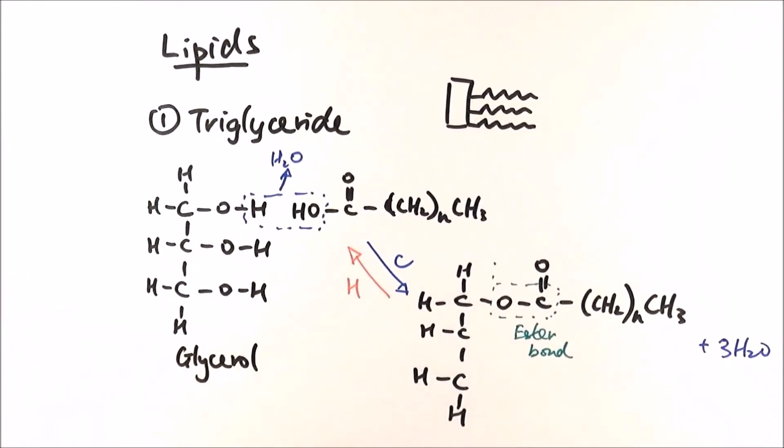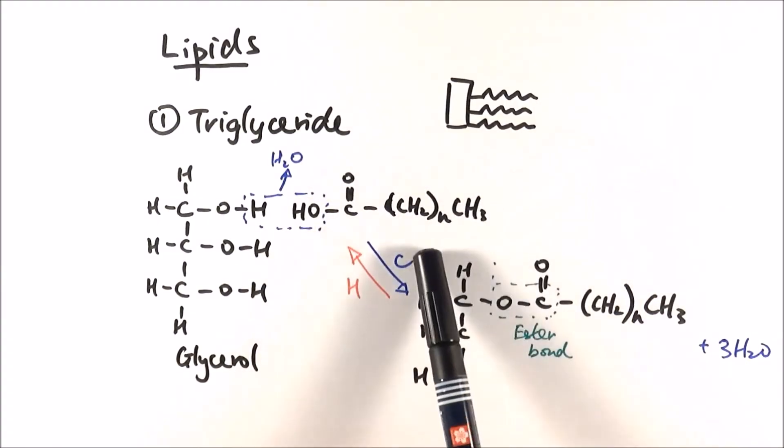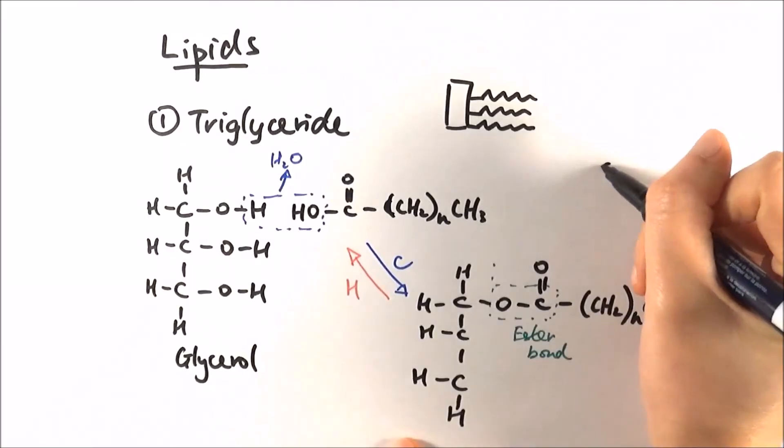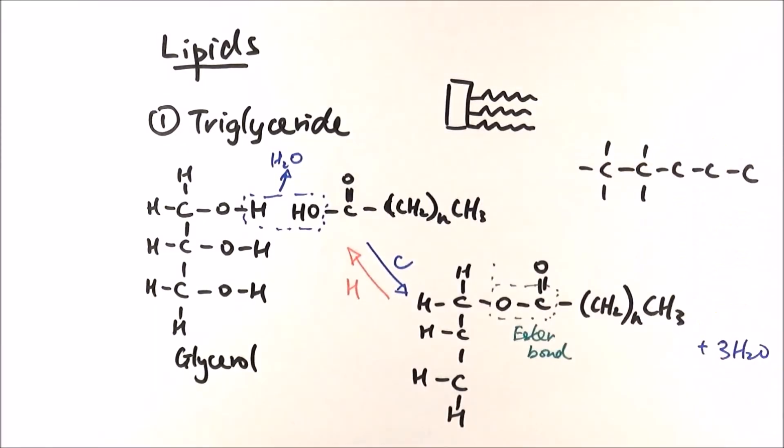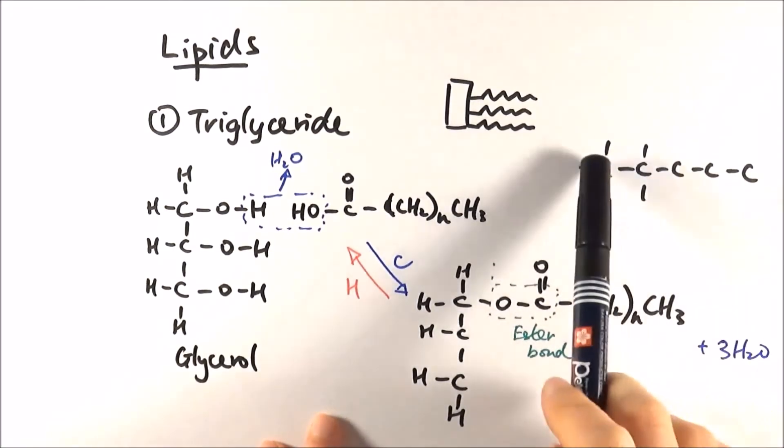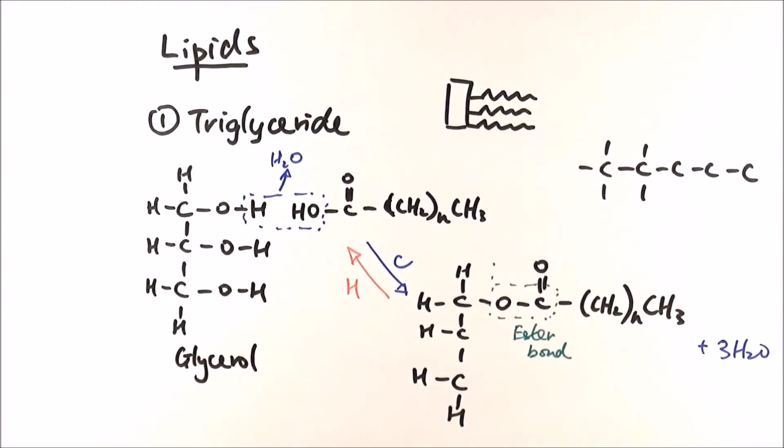One more thing to think about in triglycerides: you can see the fatty acid chains here. If all of these chains are straight single carbon-carbon bonds, that's what we call a saturated fatty acid chain. That means each of these carbon atoms is saturated, filled with hydrogens on either side.